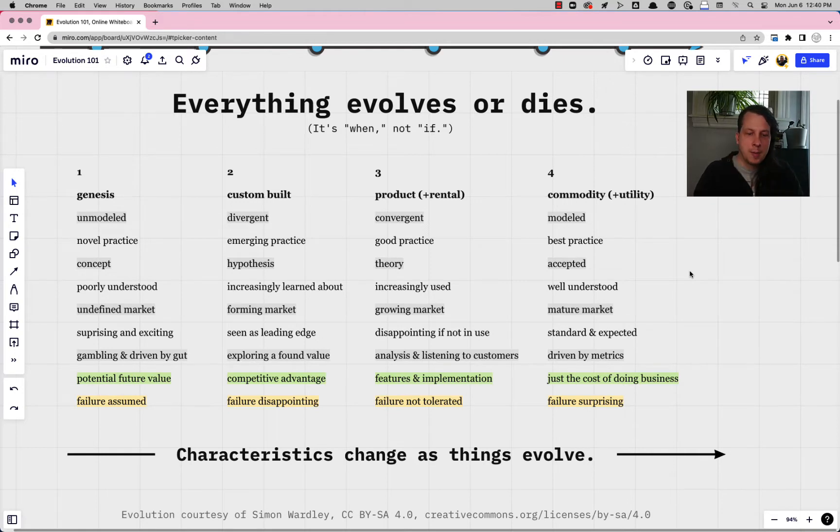So the trick is when we're making our Wardley maps how do you decide where to put something in this spectrum from left to right? And I always tell people to start simple and start easy by just picking one of the characteristics in these four different stages.